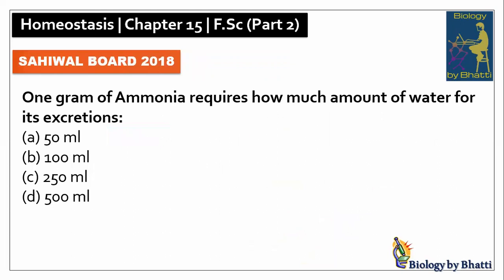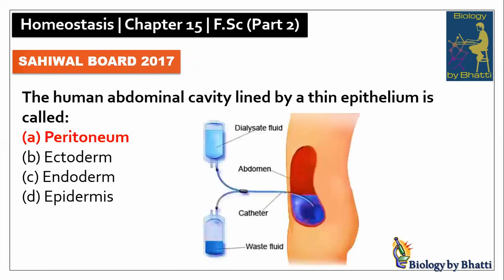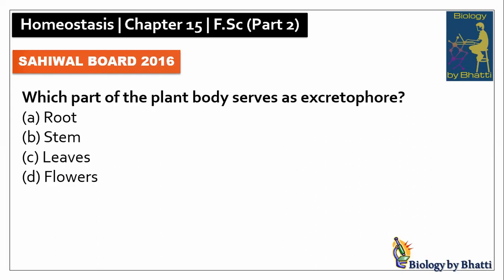Sahiwal Board 2018: 1 gram of ammonia requires 500 ml of water for its excretion, the answer was D option. The human abdominal cavity lined by a thin epithelium is called peritoneum, so the answer was A option. The excretory product that requires maximum water for its removal is ammonia, the answer is C option.